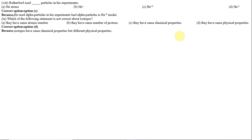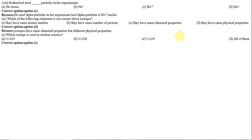Number 10: Which isotope is used in a nuclear reactor? Option A: uranium-234, Option B: uranium-238, Option C: uranium-235, Option D: all of these. The correct option is C, because uranium-235 is used in nuclear reactors and atomic bombs.